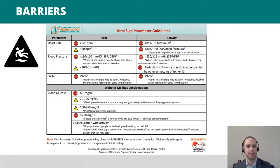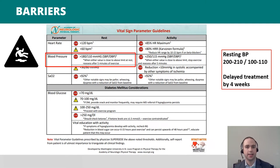Implementing high-intensity gait training requires therapists to ensure patient safety, which includes vital sign monitoring before and during treatment. This very handy vital sign parameter guideline is available on the CPG's webpage. Our patient, Mr. EC, actually had resting blood pressures well over what's considered safe to initiate exercise, so we had to postpone initiating our plan of care by a month while we got in touch with his primary care provider and got Mr. EC and his family on board with improving their medication compliance.